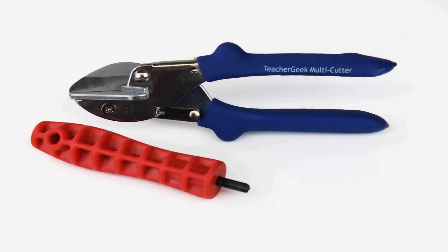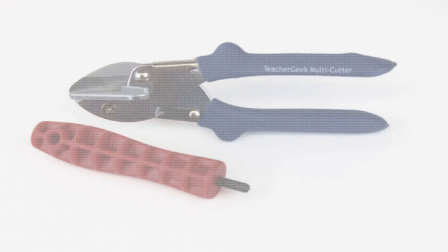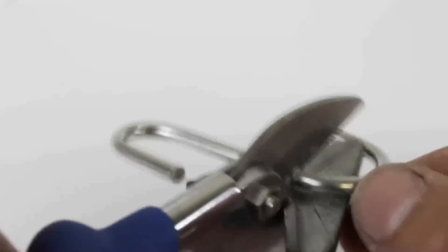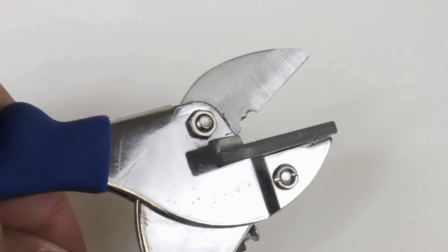The TeacherGeek construction system allows you to build almost any mechanism you can imagine using two simple tools. The dowels and connector strips can be easily cut to size using our TeacherGeek multi-cutter. But don't use the multi-cutter to cut metal because you'll ruin the blade.